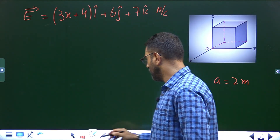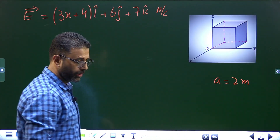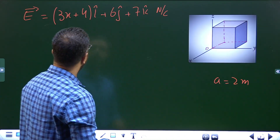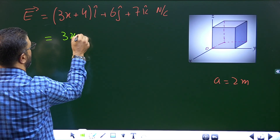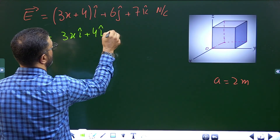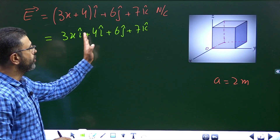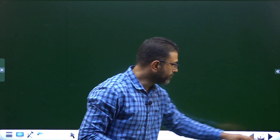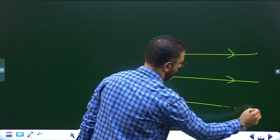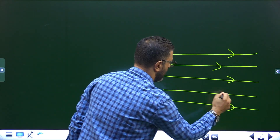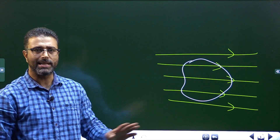This is similar to what we did in the previous session, problem number 9. We can break this field as 3xi + 4i + 6j + 7k, so it has a uniform part and a non-uniform part. As we discussed in the previous session, if we have a uniform electric field and we consider a closed surface, irrespective of the shape and size,